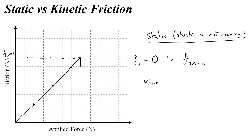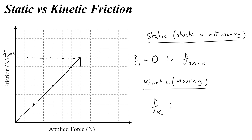Kinetic friction occurs when the object is moving, or when the two surfaces are sliding past one another — because the word kinetic basically just means moving. When the objects are sliding across each other, we call this Fk. It doesn't vary from zero to some maximum value; it's just constant — a constant number.